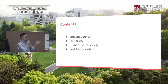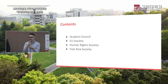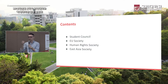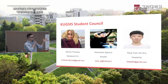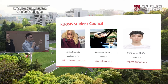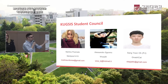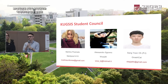We have three different societies here at GSIS. I'm representing the Student Council as the president, but we also have the European Union Society — PJ is going to talk about it — the Human Rights Society, Kiki is going to talk about it, she's the president, and the East Asian Society, Min Jung is going to talk about it — she's the vice president. We are the Student Council — me, Martina, and PJ. These are our contacts: Kakao and email. If you have any inquiries, write down our Kakao and send us a message, or talk to us after the presentation.